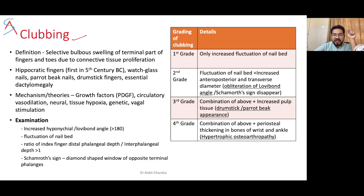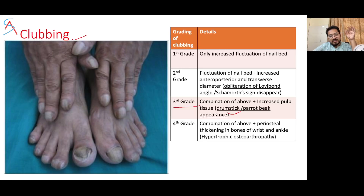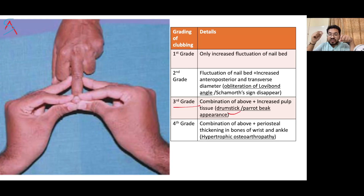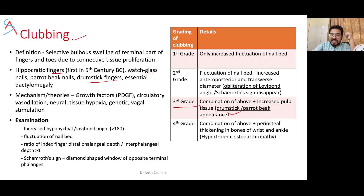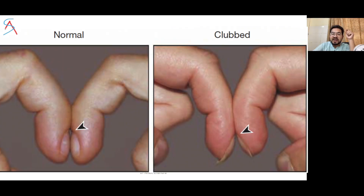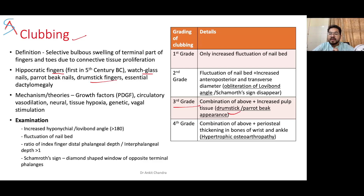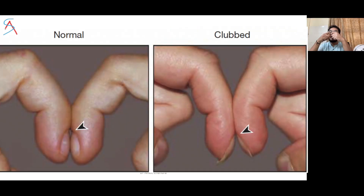Clubbing is very important in respiratory cases. It was first described by Hippocrates — hence also called Hippocratic fingers. Grade 1 has only fluctuation of the nail bed; to assess, stabilize the pulp of the finger and try to move the nail bed. Grade 2 is fluctuation plus increased anteroposterior and transverse diameter with obliteration of the Lovibond angle. The Schamroth sign: when fingers are joined together, a diamond shape forms between the two distal phalanges; when this diamond sign is lost, Schamroth sign is said to disappear — indicating grade 2.